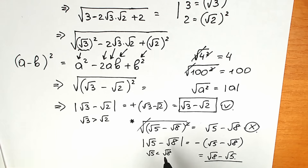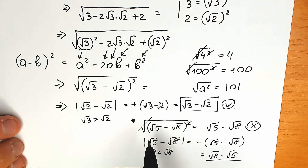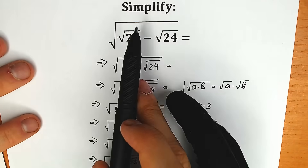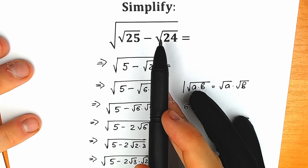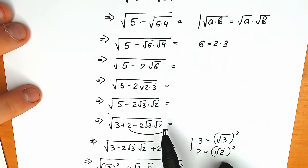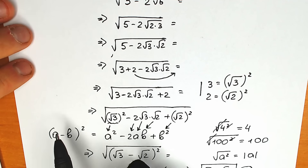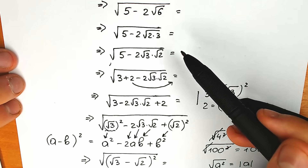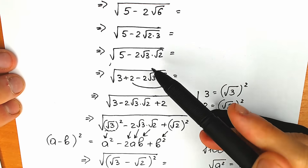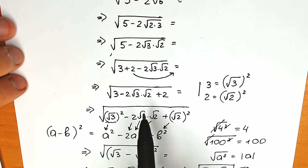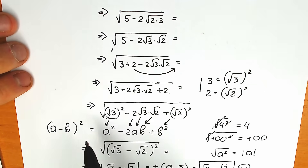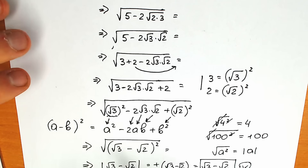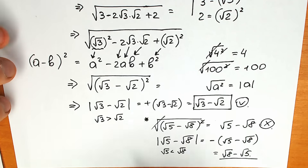The main idea to solve this type of question — when you have a square root of an expression — is to create a perfect square inside the square root sign. Step by step, I expanded the expression, wrote 5 as 2 plus 3, and identified square root of 3 and square root of 2 so we could group them into the (a minus b) squared formula. Once we create that, we can apply absolute value and simplify.